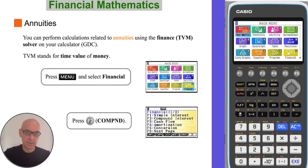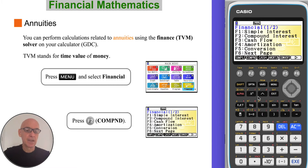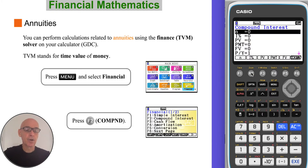To access the finance solver from the main menu, select Financial and then press F2 for compound interest.